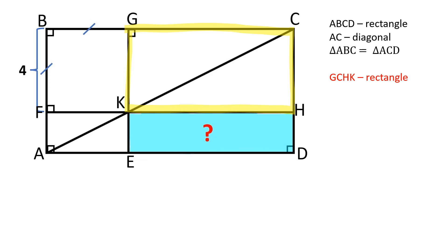GCHK is a rectangle. CK is its diagonal. Triangles GCK and CHK are congruent. Let's mark them pink.